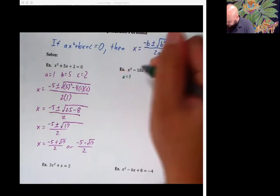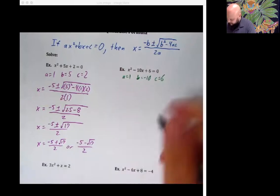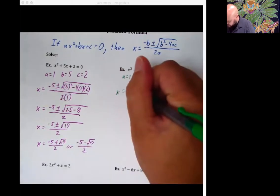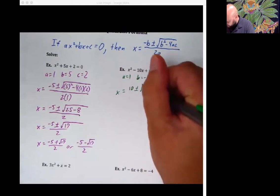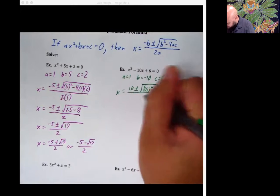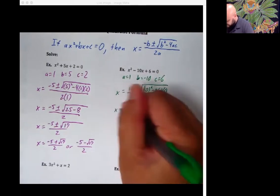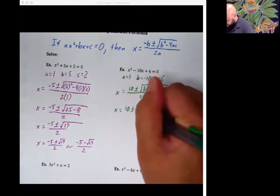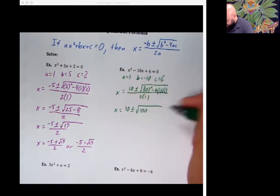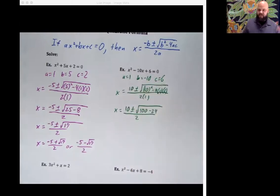So a equals 1, b equals negative 10, c equals 6. Let's plug them in. x is equal to 10 plus or minus the square root of 10 squared minus 4 times 1 times 6 all over 2 times 1. So this means x is going to be equal to 10 plus or minus the square root of 100 minus 24 over 2.